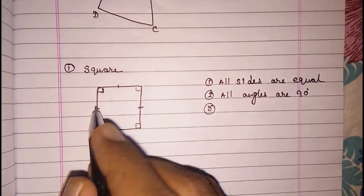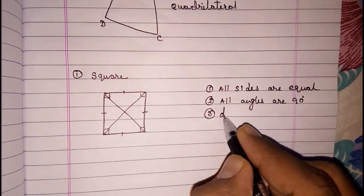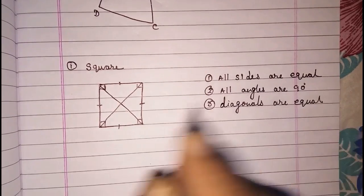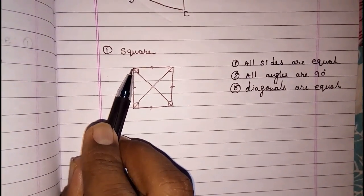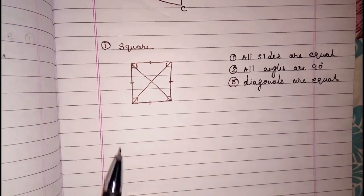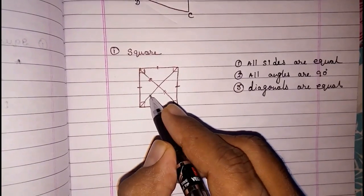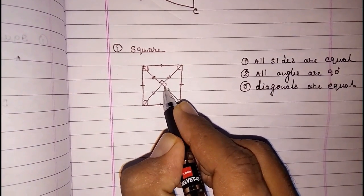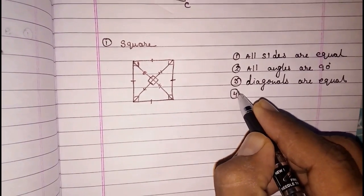The third thing in a square: diagonals are equal. These are the two diagonals. Many students don't know that to draw a diagonal we have to join the points of the opposite vertices by making a line — this line is called a diagonal. Next, the diagonals bisect each other, meaning these two parts will be equal and those two parts will be equal. One more thing: in a square, the diagonals bisect each other perpendicularly, so all intersecting angles are 90 degrees.